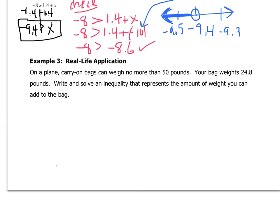Example 3. On a plane, carry-on bags can weigh no more than 50 pounds. If you think back to the last lesson, we said no more is the symbol less than or equal to. Your bag weighs 24.8 pounds. Write and solve an inequality that represents the amount of weight you can add to the bag. You might be able to calculate this in your head, but they are asking you to write an inequality, so we have to do it.